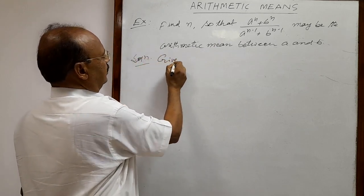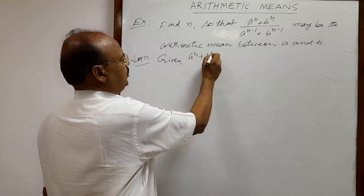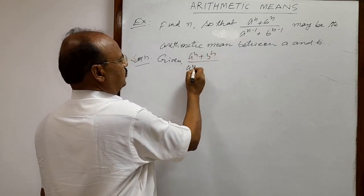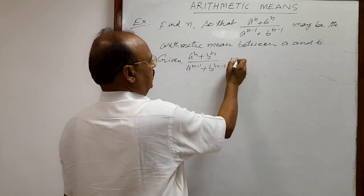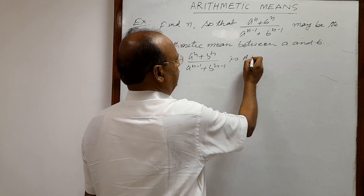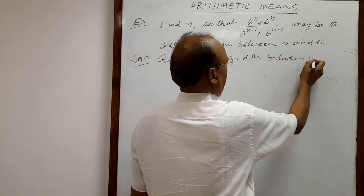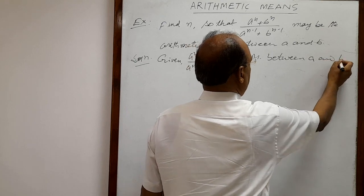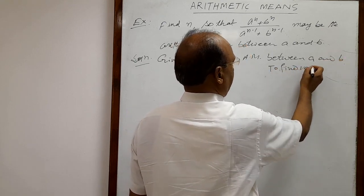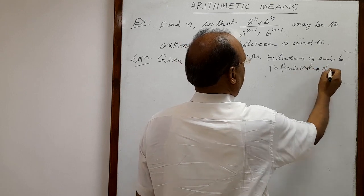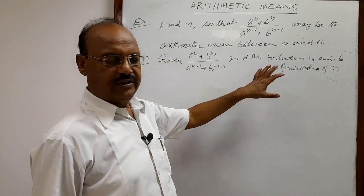So it is given that a to the power n plus b to the power n, upon a to the power n minus 1 plus b to the power n minus 1, is the arithmetic mean between a and b, and we have to find the value of n. This is the question.